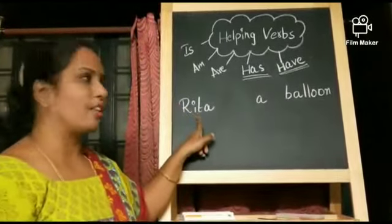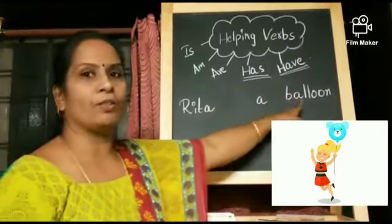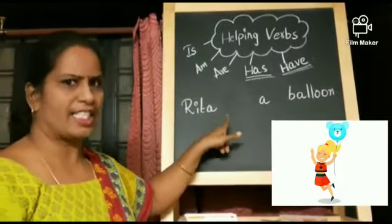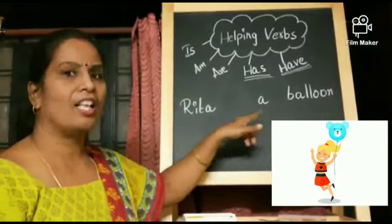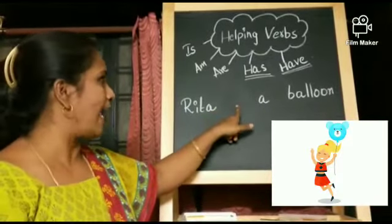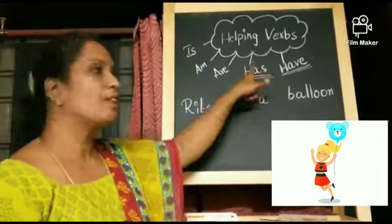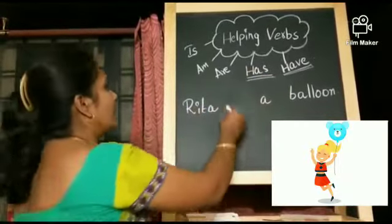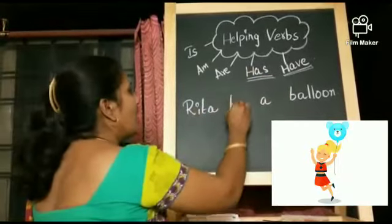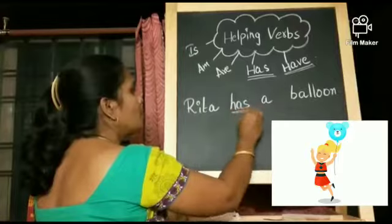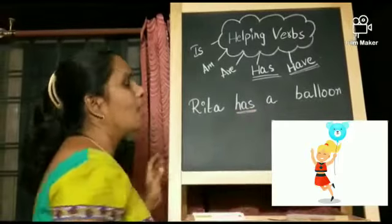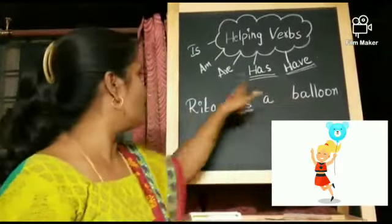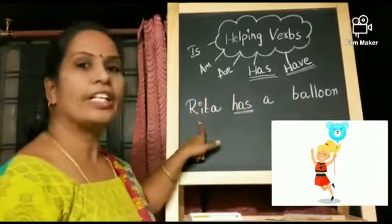Look at here children, 'reach out a balloon.' Is there any link in the sentence? Is it a sentence? No, we need to add a helping verb to link the sentence. Rita has a balloon. We use has here because the balloon belongs to Rita.